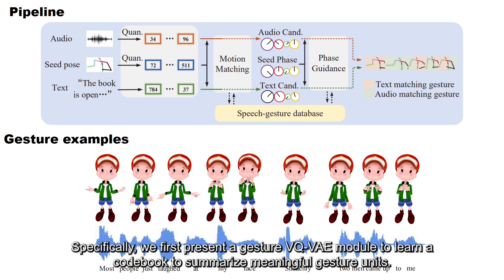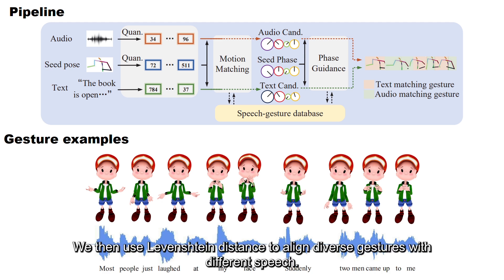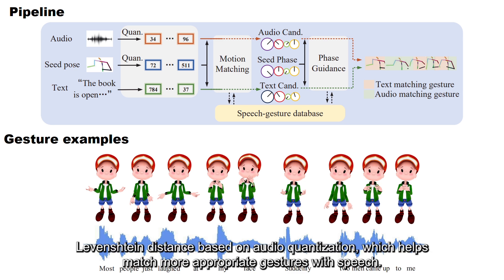Specifically, we first present a gesture VQVAE module to learn a codebook to summarize meaningful gesture units. We then use Levenshtein distance to align diverse gestures with different speech, based on audio quantization, which helps match more appropriate gestures with speech.